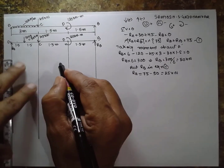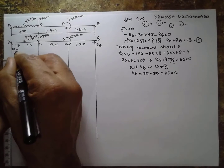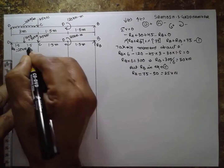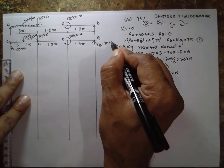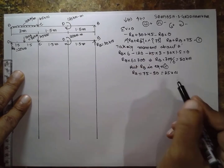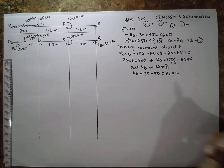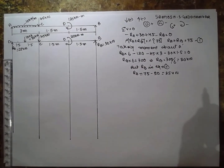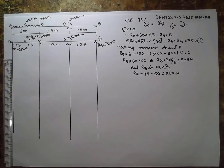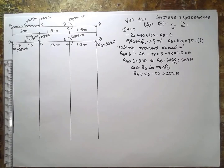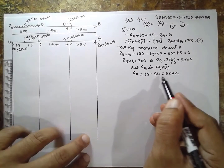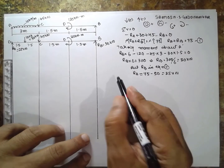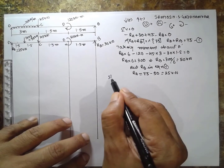We have obtained Ra equal to 25 kN and Rb equal to 50 kN. Now we proceed to draw the shear force diagram.